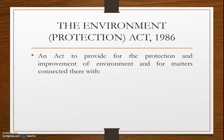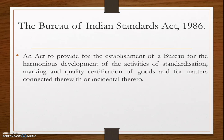The Environment Protection Act 1986 aims to provide for the protection and improvement of the environment. This act facilitates coordination between different states as well as central authorities in matters related to the environment, which includes water, air, land, and the interrelationship that exists among water, air, land, human beings, and other living creatures and plants. It is known as an umbrella act.